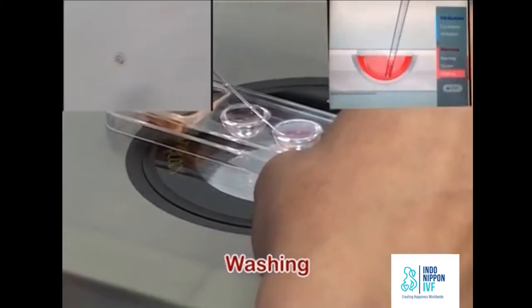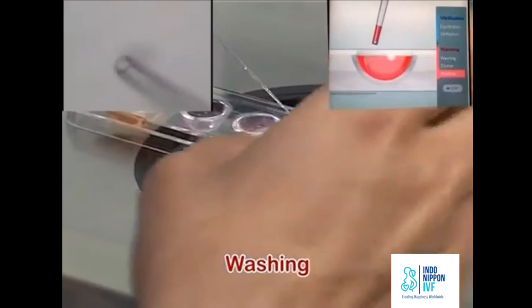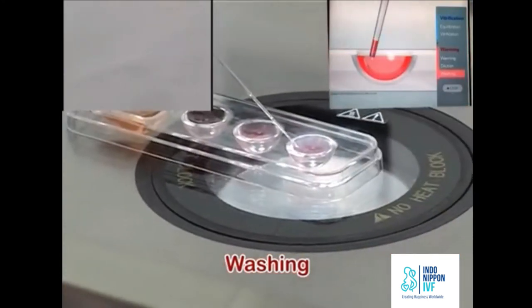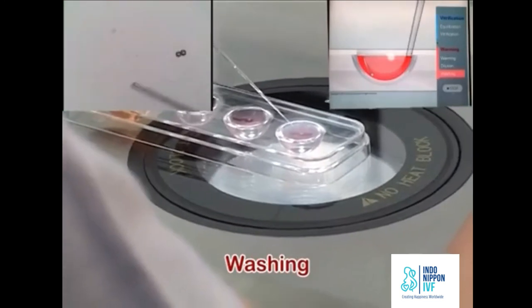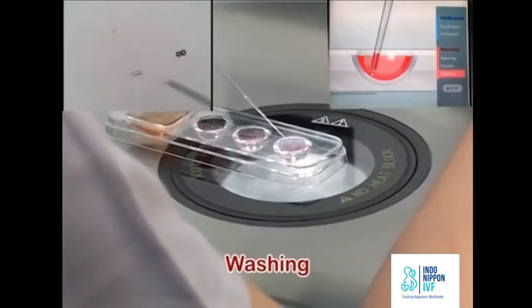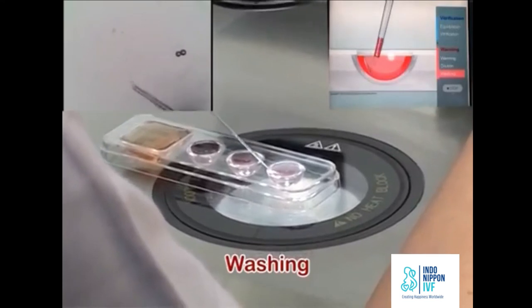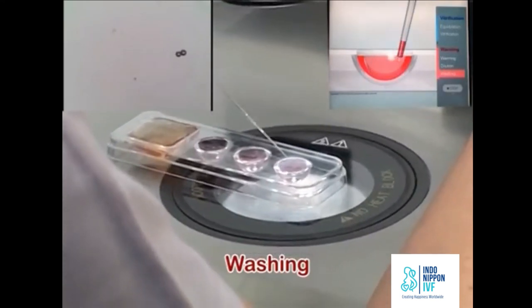Aspirate the oocyte with minimum volume of WS1. Put the oocyte on the surface of the WS2 well. It will free fall to the bottom of the well. Pick up the oocyte from the bottom and let it again free fall from the surface of WS2 well to the bottom, thus washing the oocyte twice.